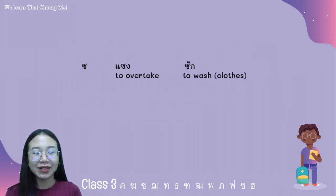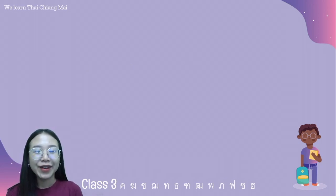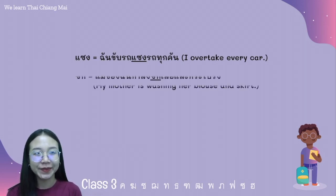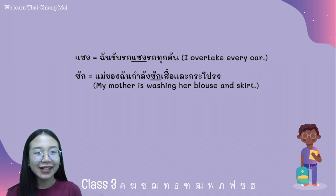And next, สอโซ่. We have the words แสง and สัก. For example, แสง: ฉันขับรถ แสงรถทุกคัน. The word สัก: แม่ของฉันกำลังสักเสื้อ. The word สัก means to watch, and in Thai we use the word สัก only in close/familiar contexts.